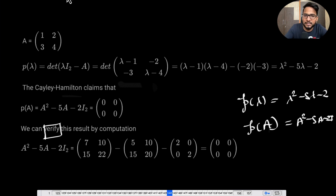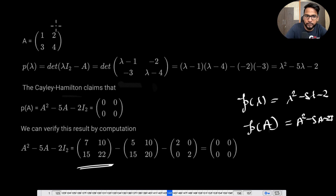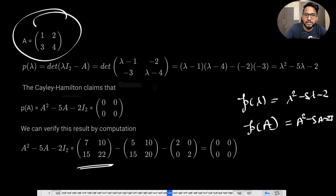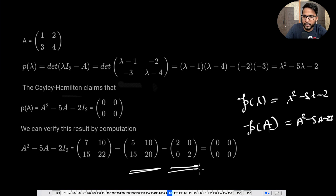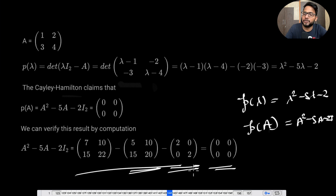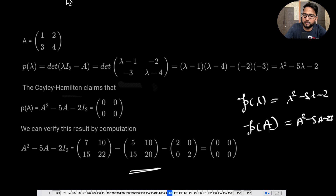You can verify this result by computation: calculate A^2, calculate 5A, then 2I, and ultimately this will be zero. That's how you apply the theorem.